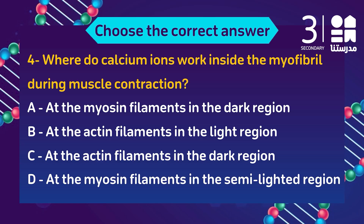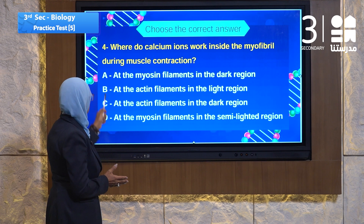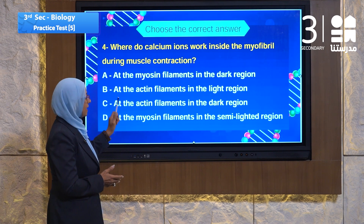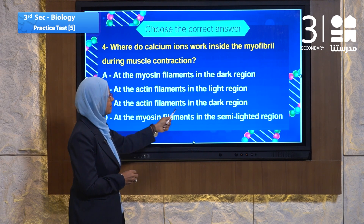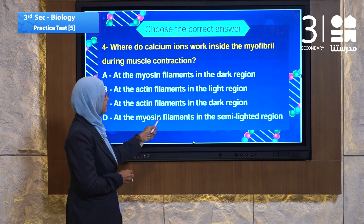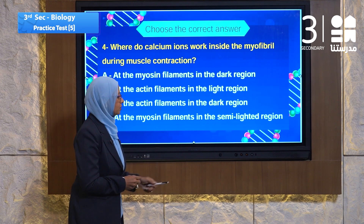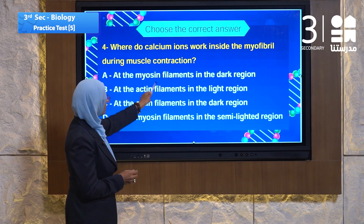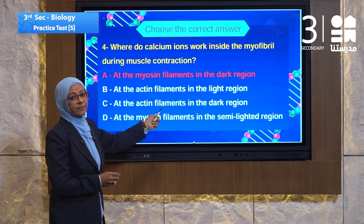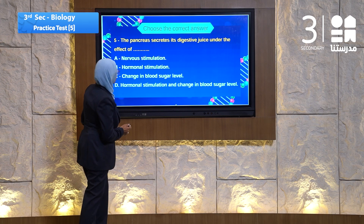Question number four speaks about the role of calcium ions. The question is: where do calcium ions work? Here 'where' means the place. Calcium ions work inside the myofibra during muscle contraction. The choices include: a) at the myosin filaments in the dark region, b) at the actin filaments in the light region, c) at the actin filaments in the dark region, d) at the myosin filaments in the semi-lighted region. Calcium ions work at the myosin filaments in the dark region — that's the answer.